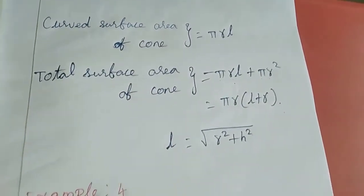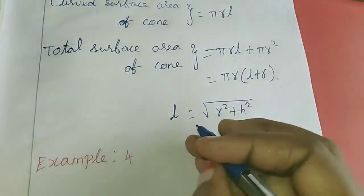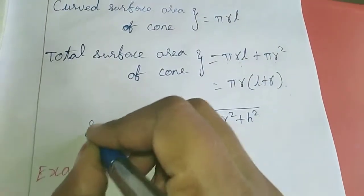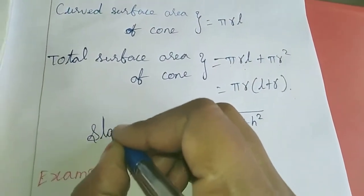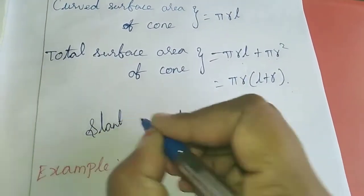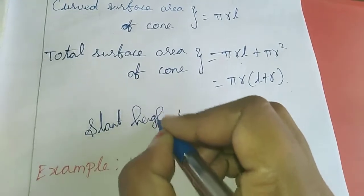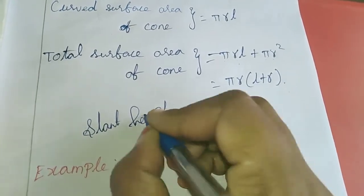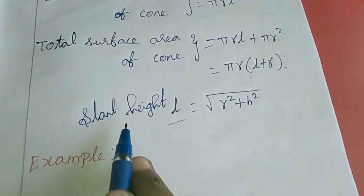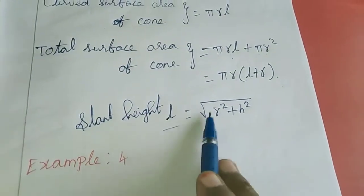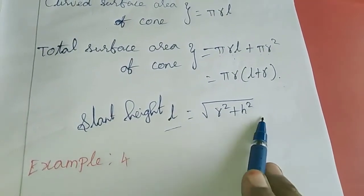One more formula we have, that is l, which means slant height. h is the normal height, and l is the slant height, that is the square root of r square plus h square.